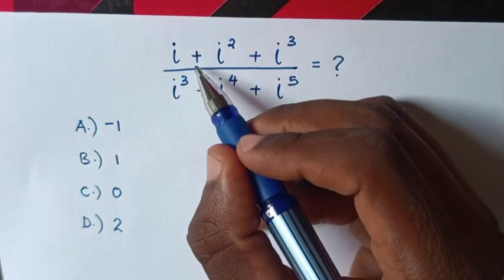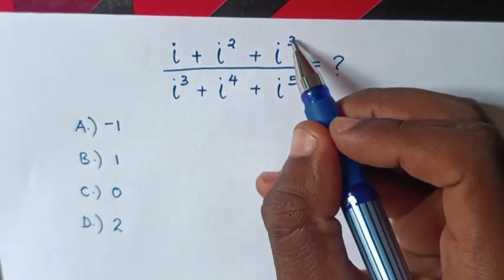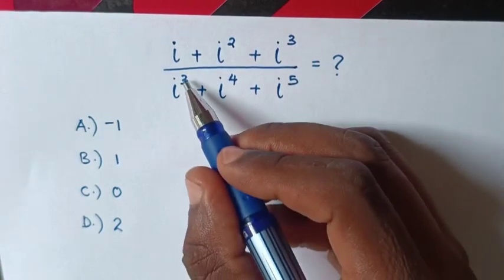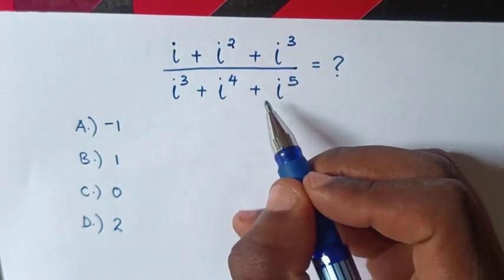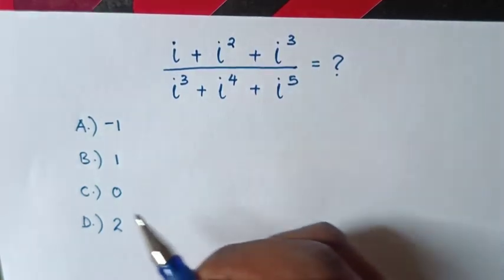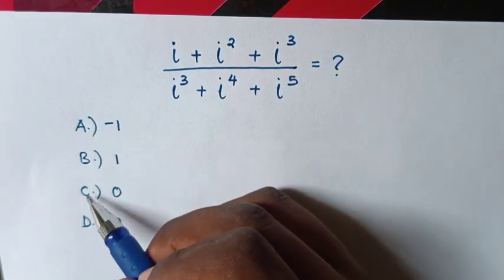Hello, how to solve (i + i² + i³) over (i³ + i⁴ + i⁵)? Choose between answer A, B, C, or D.